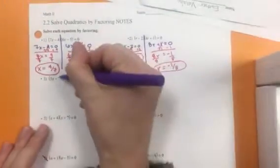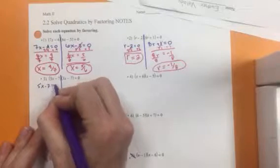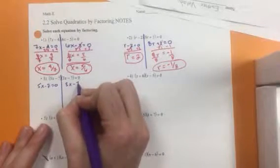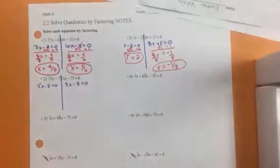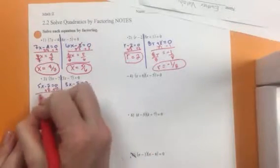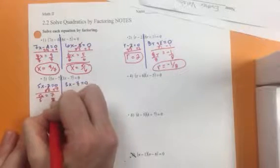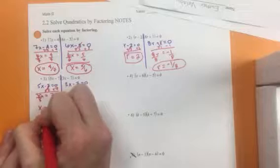On number 3, we're going to set both factors equal to 0. Solve both sides by adding 7. Divide by 5 to cancel that out so the x is all by itself.